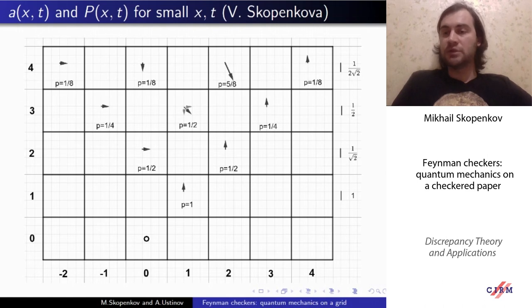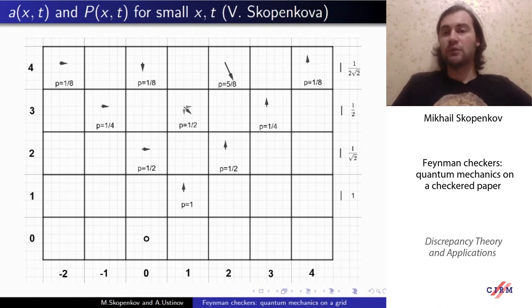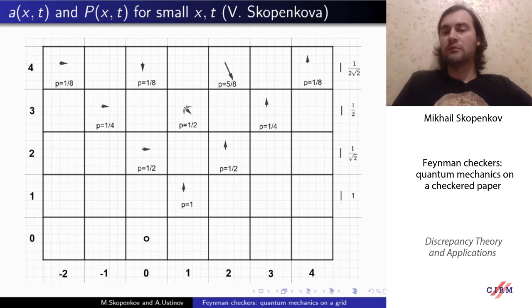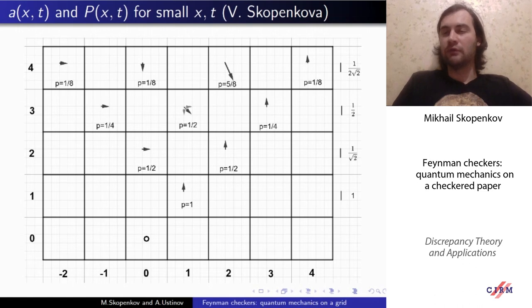For t equals two, for square (2, 2), we still have only one checker path, with no turns. This results in a vector looking upwards, but the length is normalized to one over square root of two, and the squared length is one half. So the probability to find the electron there is one half. Looking at other squares on the same diagonal, the arrow still points upwards but the length is normalized by a certain factor, and we see a progression of probabilities: one over four, one over eight, and so on.